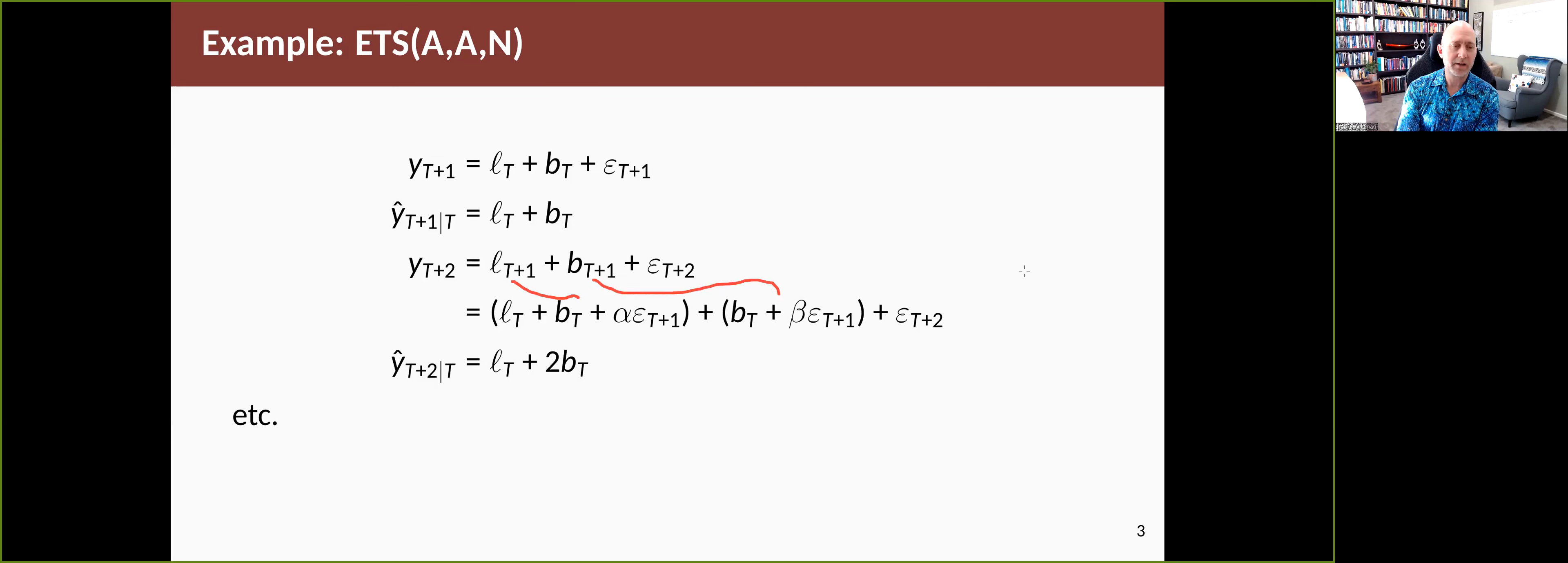The mean of that is simply L plus two B because we've got a B here and a B here, so we end up with two B's. The variance is going to come from each of these terms, so we can write out what the variance is going to look like.